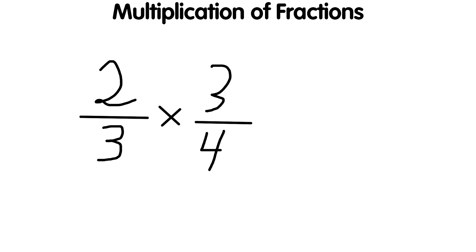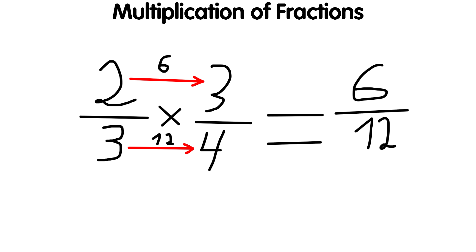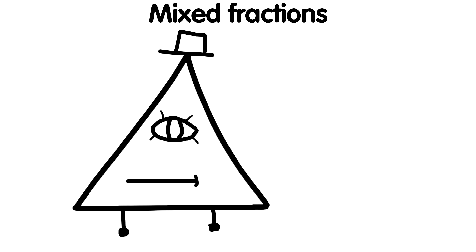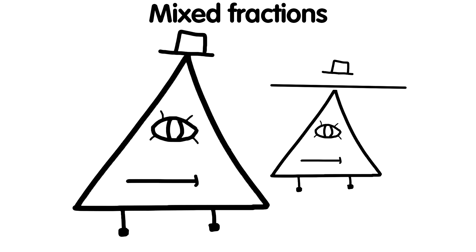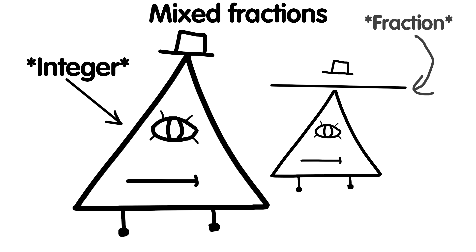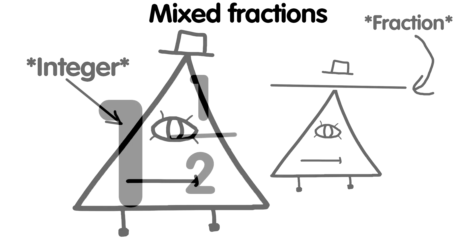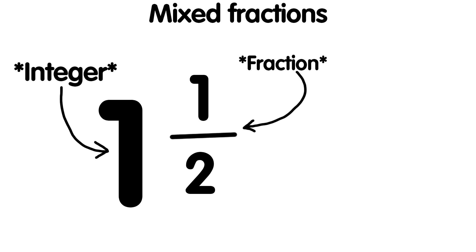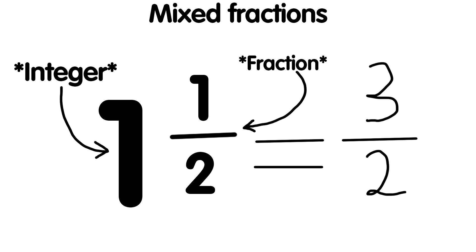Multiplication of fractions: numerators and denominators are multiplied separately. For example, for two-thirds and three-fourths, the result of multiplication is six-twelfths. Mixed fractions are fractional numbers made up of an integer part and an ordinary fraction. For example, one and one-half is a mixed fraction where 1 is the whole part and one-half is the ordinary fraction. One and one-half can also be written as three-halves.